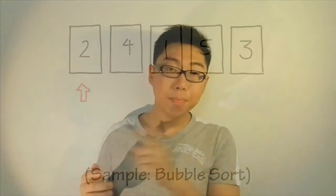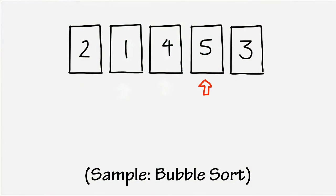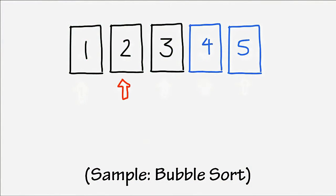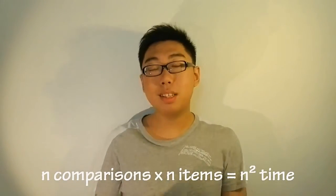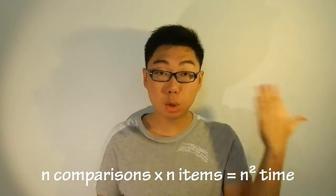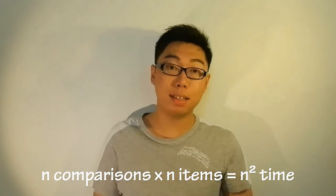Now for certain sorting algorithms that we will encounter shortly, you will realize that they have to go through the list again and again, and for every pass through the list, one item is put in place. What this means is that the algorithm must run through a list of n items, n times. This is what we call an algorithm with n squared complexity.